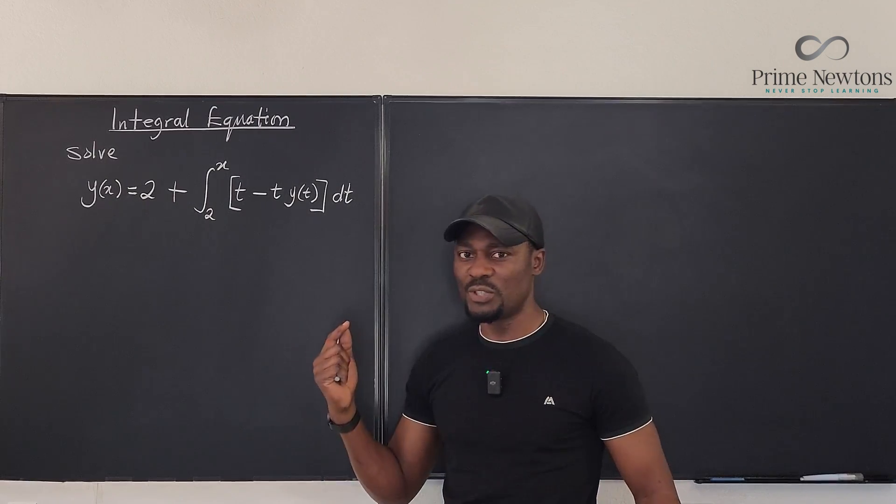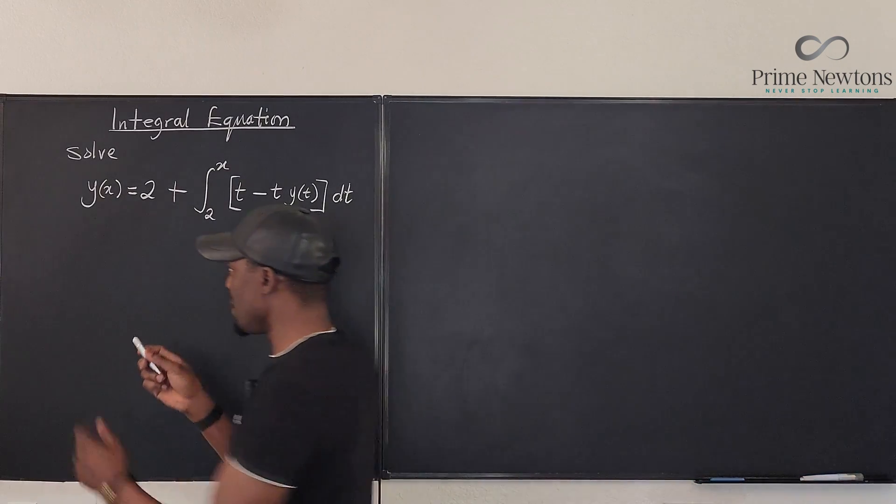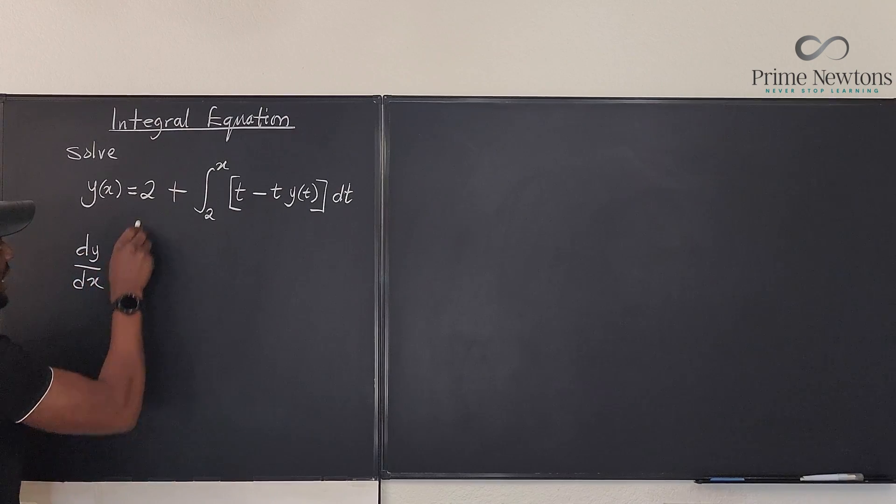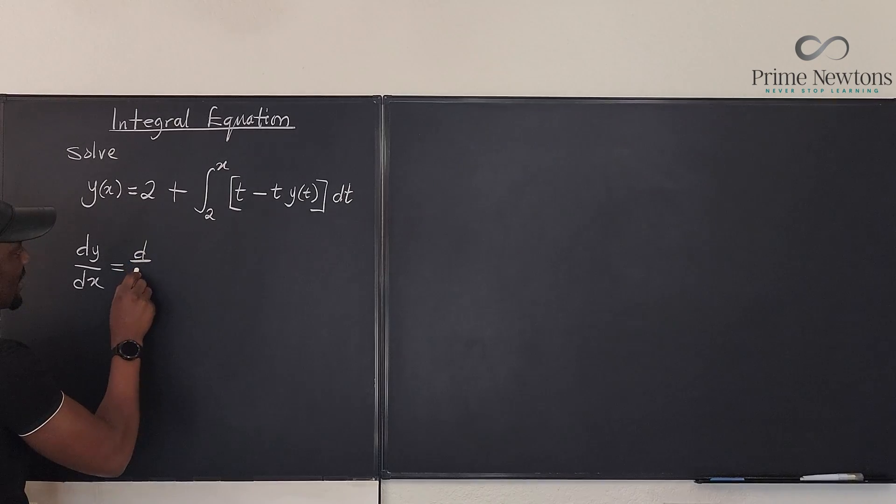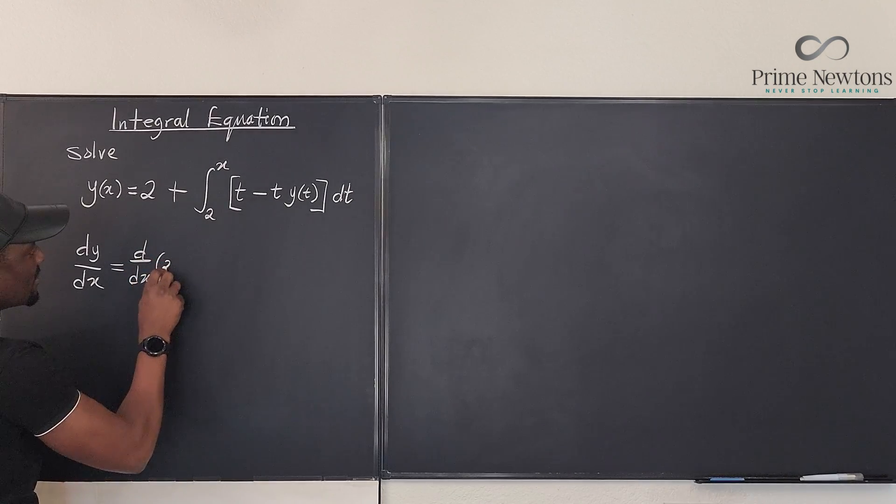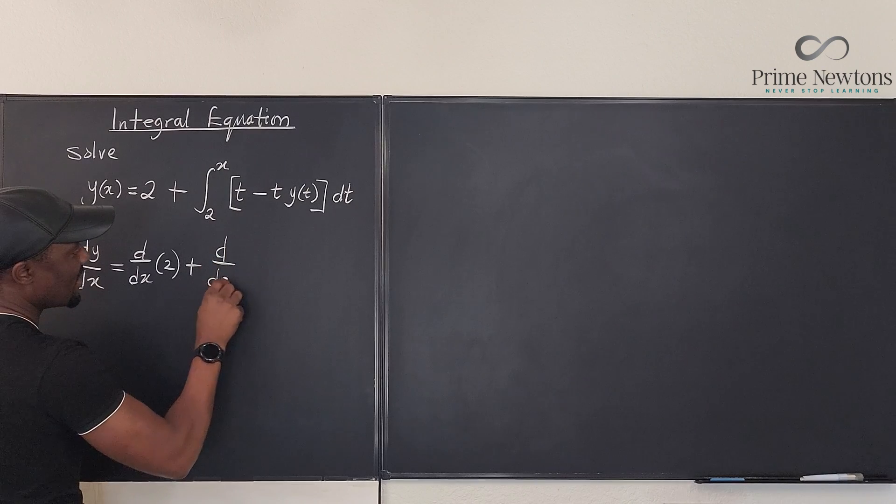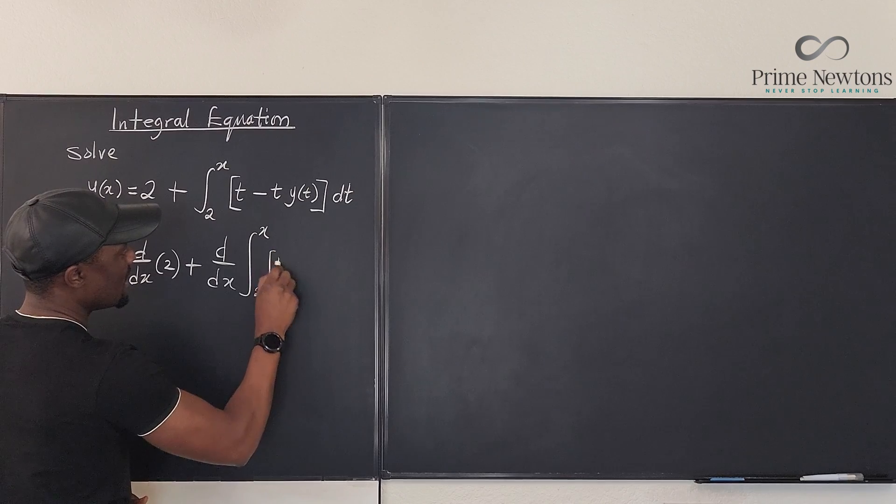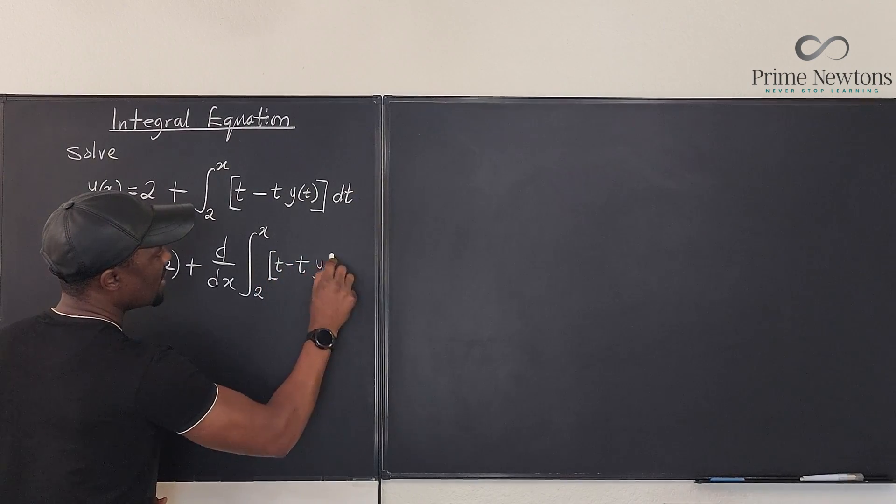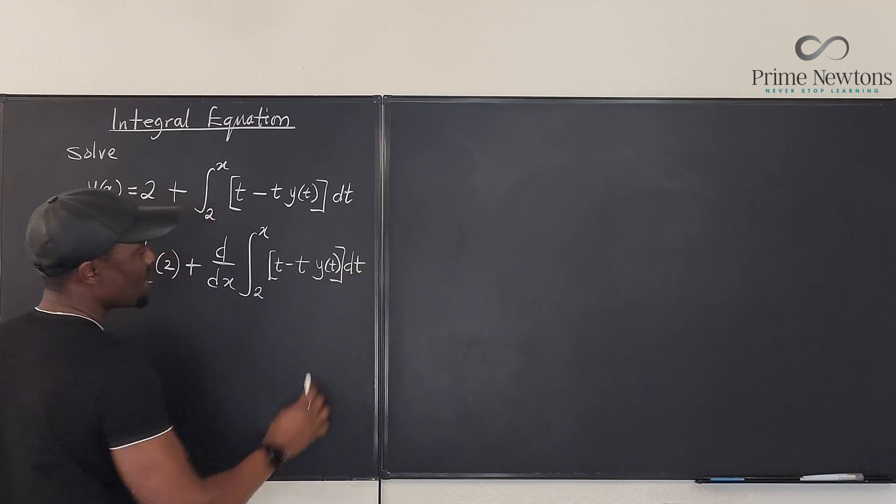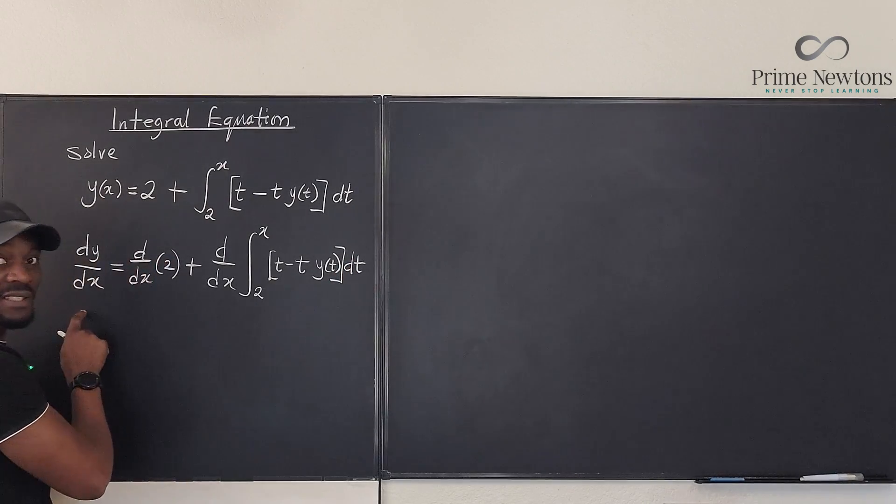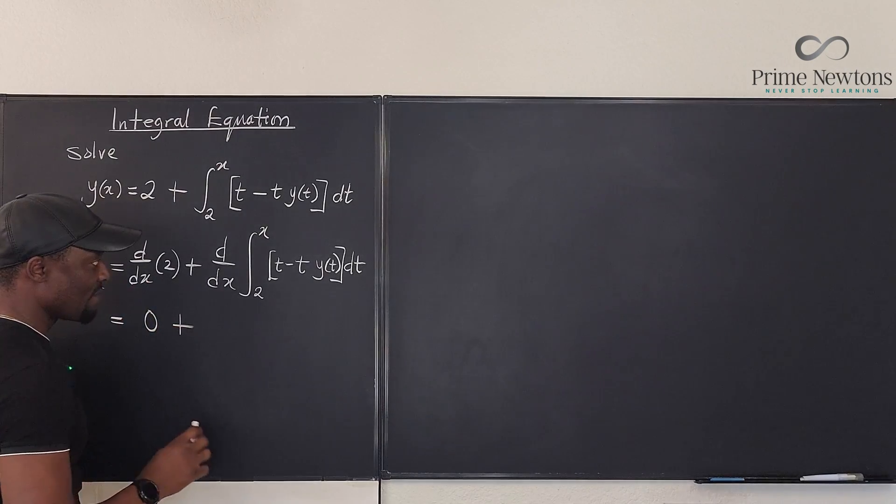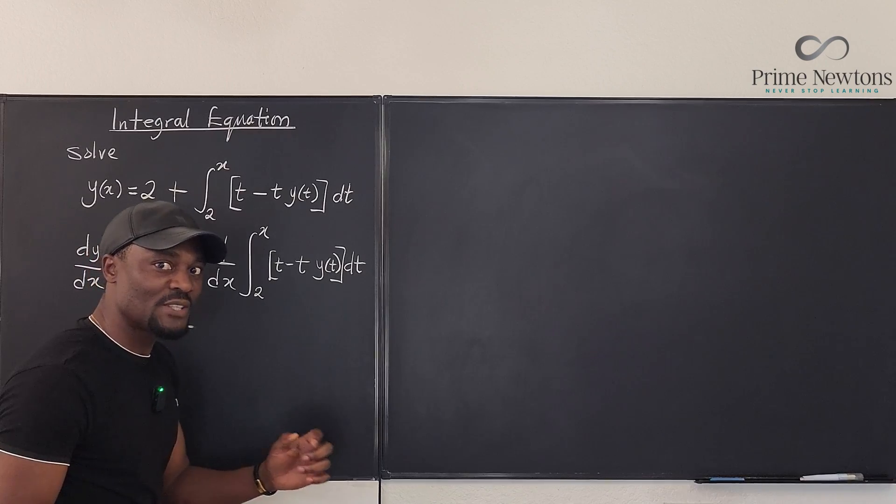So if we differentiate everything with respect to x, let's see what we get. Here we're going to get dy dx. Here we're going to get d dx of 2, plus d dx of this integral from 2 to x of (t - t·y(t)) dt. Now we don't have a problem with this side because that's what we're looking for. We know how to differentiate a constant. We know it's going to be 0. But this is where FTC part 1 and 2 show up.